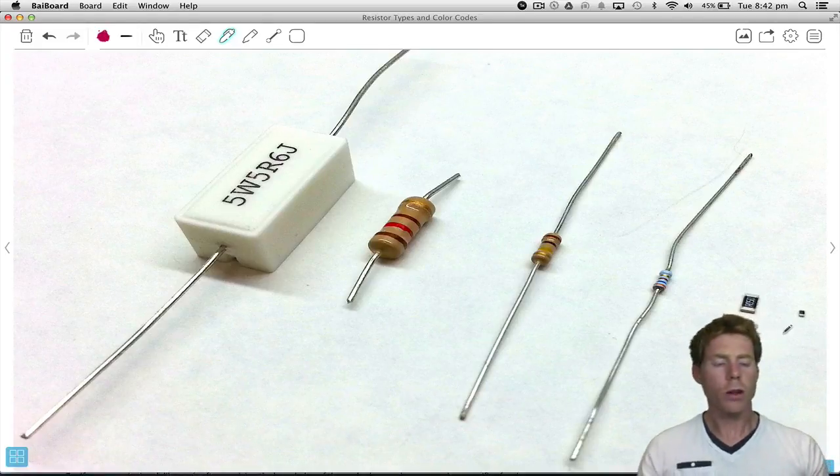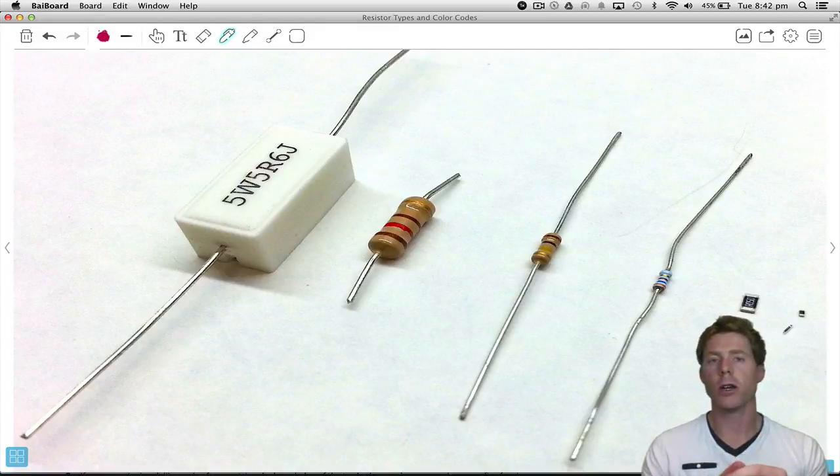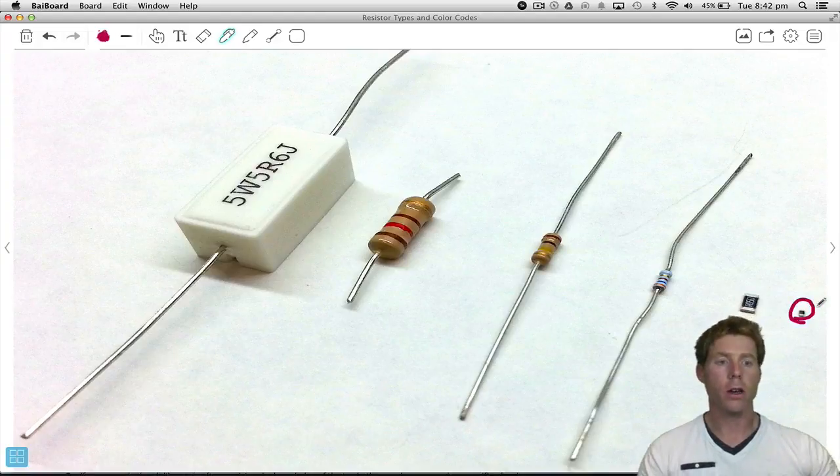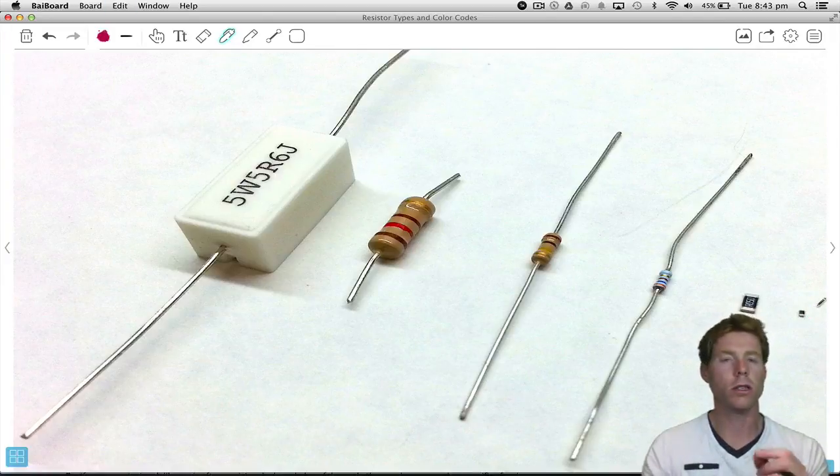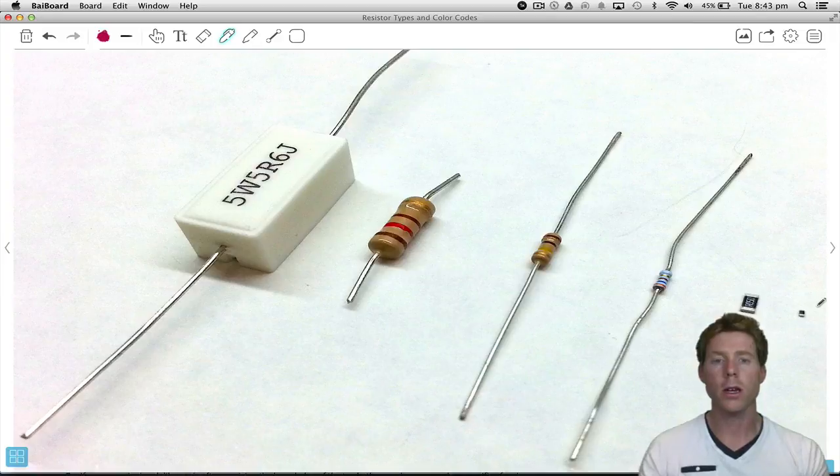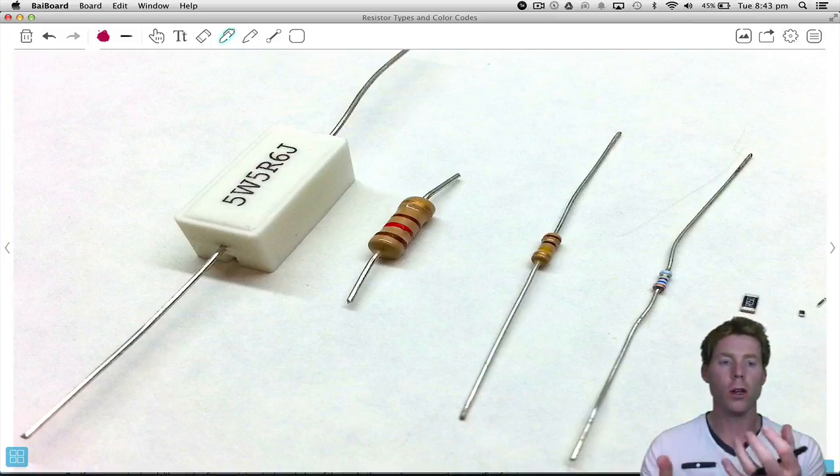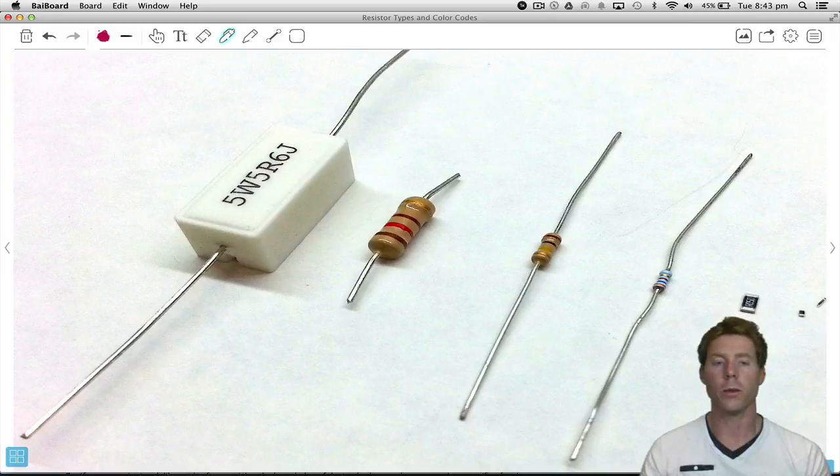Now the reason we would have different sizes is not so much to get different values of resistance. I mean this little one right down here, that could be anywhere from like 100 ohms up to 10 million ohms. So it's not so much the physical size of the resistor that determines how much resistance it is. It's just the internal composition of the resistive materials that determines that.